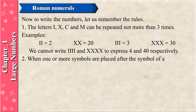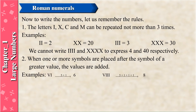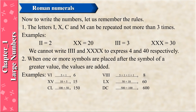When one or more symbols are placed after the symbol of a greater value, the values are added. Examples: VI = 5 + 1 = 6; VIII = 5 + 1 + 1 + 1 = 8; XV = 10 + 5 = 15; LX = 50 + 10 = 60; CL = 100 + 50 = 150; DC = 500 + 100 = 600; MD = 1000 + 500 = 1500; MCC = 1000 + 100 + 100 = 1200.